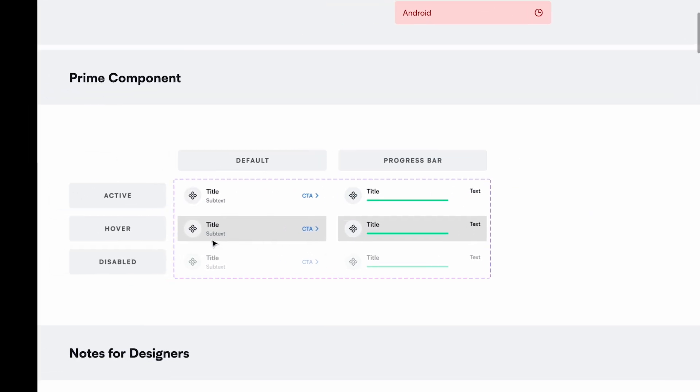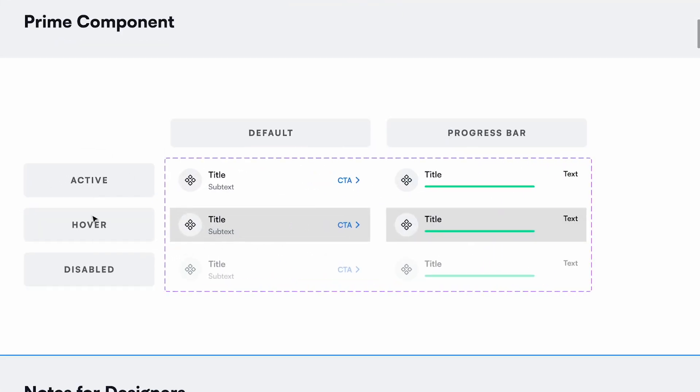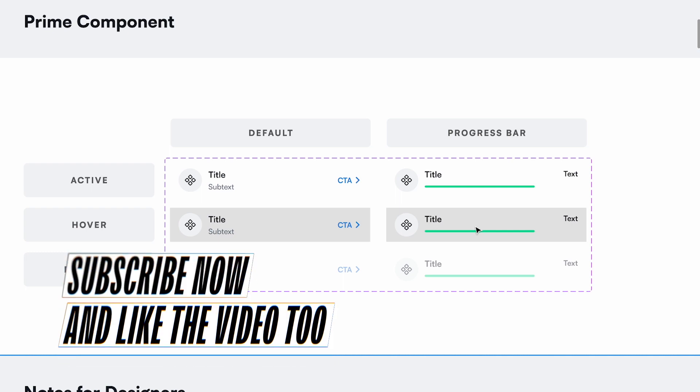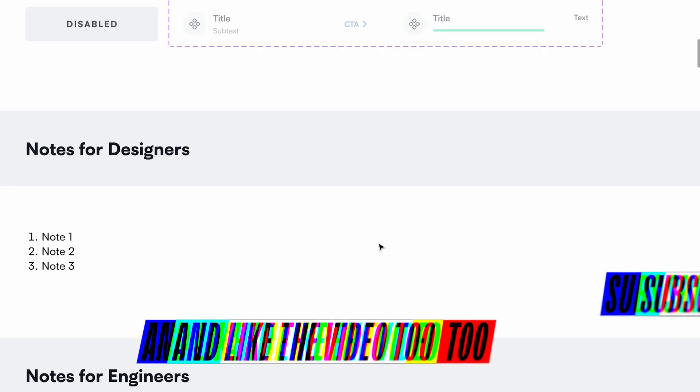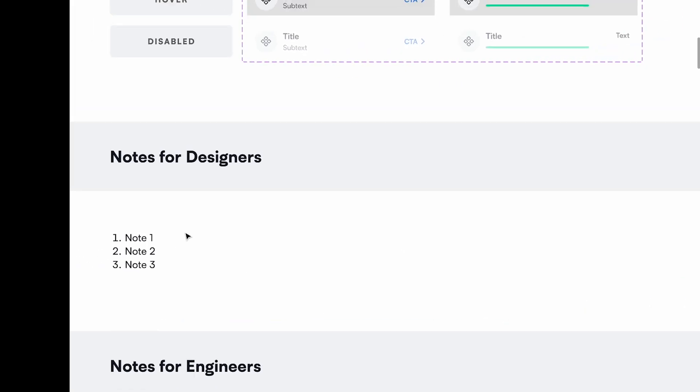You want designers to come and pick from this component and then make the respective changes. In this case I have three states: active, hover, and disabled, and two types: default and one with a progress bar. This is just an example — your components might look very different and be constructed in a different way, so you have to take a judgment call on that.